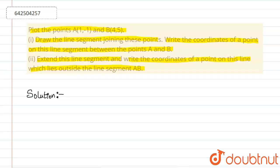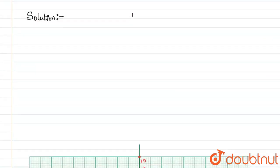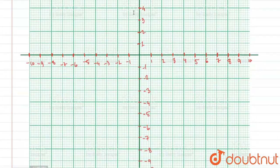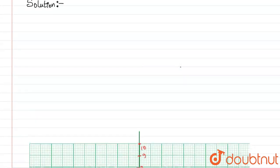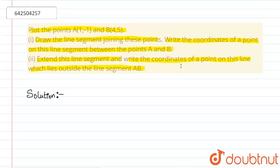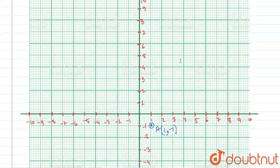At the very beginning, we'll be plotting the points for A and B. Point A is (1, -1), so here is point A at (1, -1). The second point is B at (4, 5), so here is four on the x-axis and five on the y-axis — this is point B(4, 5).